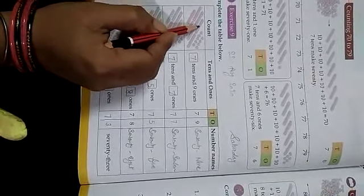This is the value of 10. 10 plus 10, 20. 20 plus 10, 30. 30 plus 10, 40. 40 plus 10, 50. 50 plus 10, 60. 60 plus 10, 70. This one is 7 10s.